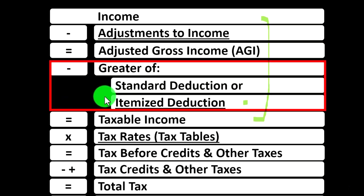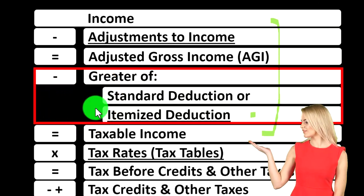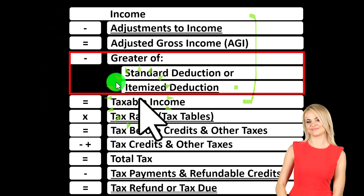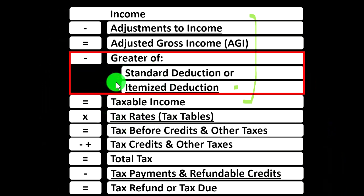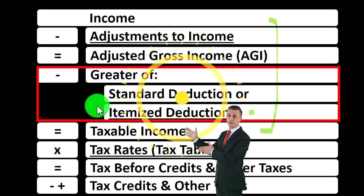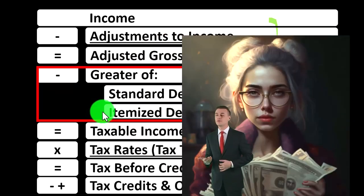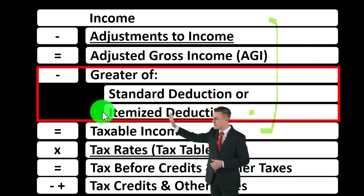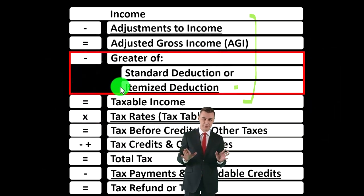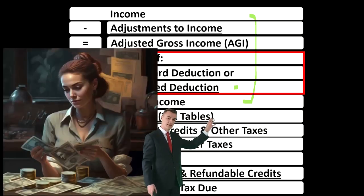We talked about the standard deductions before. It's important to understand the standard deduction when thinking about itemized deductions, because you have to clear the hurdle of the standard deduction before you're able to take the itemized deductions. It's a fairly substantial hurdle that went up a few years ago, so most people are going to be taking the standard deduction. If itemized deductions aren't going to be anywhere near as high as the standard deduction, you don't have to go through the burdensome task of pulling together all that information.